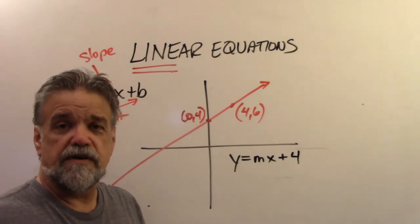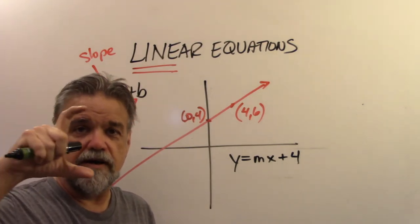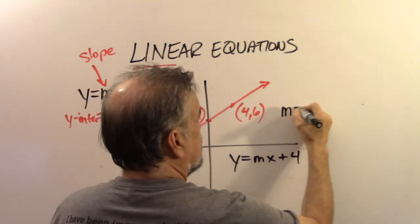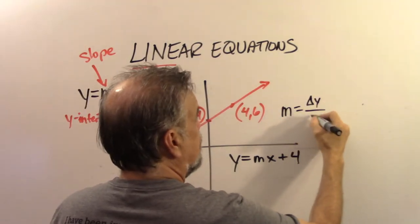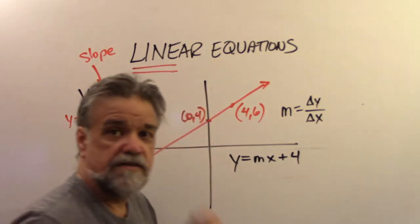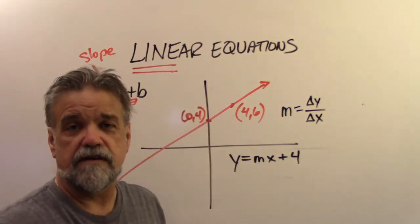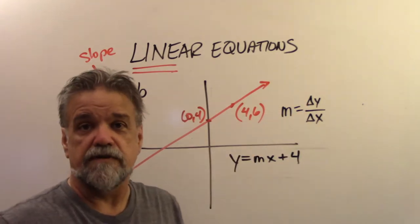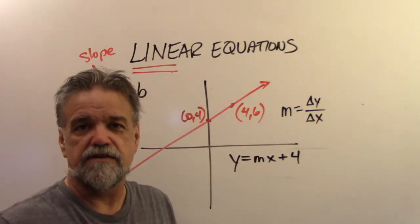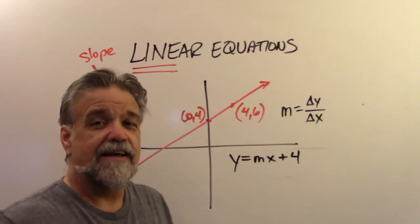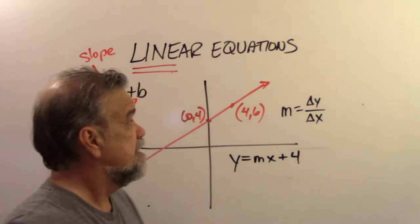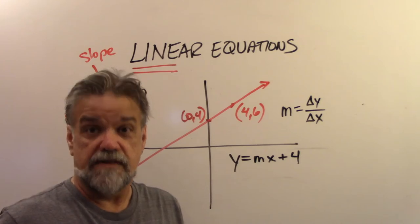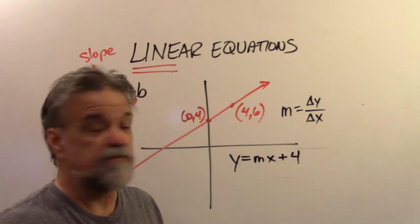The slope is the change in y — the vertical change — divided by the change in x. It's delta y over delta x. Delta is a Greek letter — a Greek d that looks like a triangle and means difference. If you use the word difference, you might think of it like a subtraction problem — and yeah, exactly like a subtraction problem.